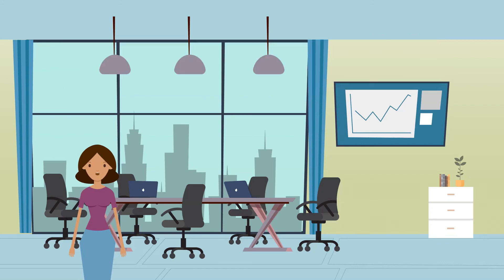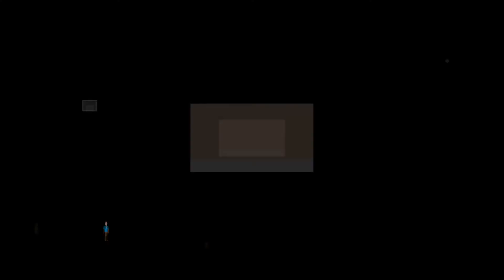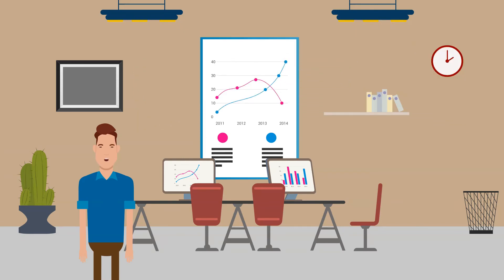When countries decide what to specialize in, the essential question is: who can produce the product at a lower opportunity cost? Opportunity cost refers to what must be given up to obtain an item — calculating what one could have produced instead. For example, the opportunity cost for Bob of one bottle of ketchup is half a bottle of mustard. Tom could have produced one-third of a bottle of mustard in the time it takes to make one bottle of ketchup. Since Tom gives up less mustard per bottle of ketchup, Tom has the comparative advantage in ketchup, and Bob has the comparative advantage in mustard.